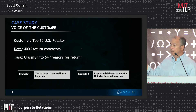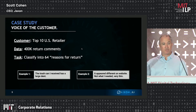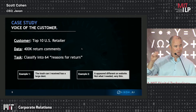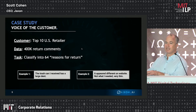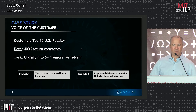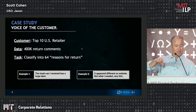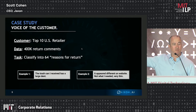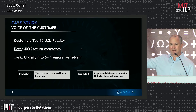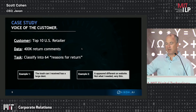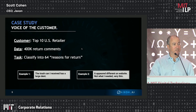Here's a case study we did with a large retailer where they did away with the drop-down menu for reason for return, because they found everyone would just pick the first option that got their money back. So they force you to free-form text in and write why you're returning the goods. In this example on the bottom left, the trash can was dented. That written example needs to map to — in their case — 64 different reasons for return: could have been damage, packaging issues, assembly struggles, and so on. So taking the raw example and mapping it to these 64 different reasons for return.